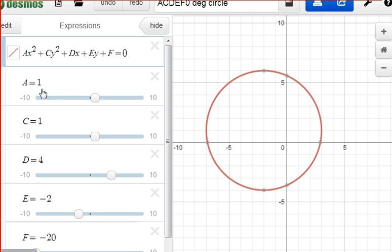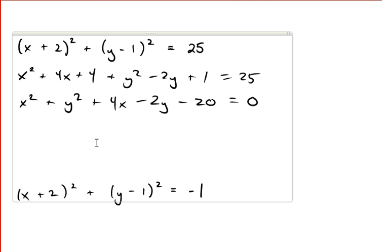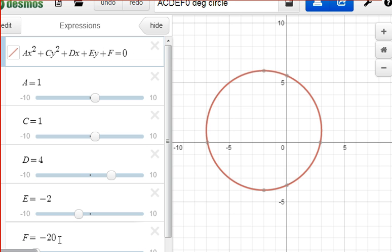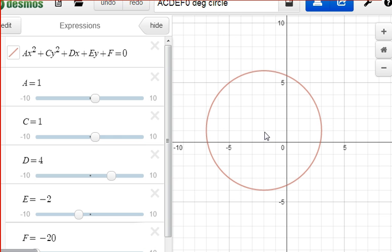So here's that circle. We have 1, 1, 4, -2, -20. And we get a circle whose center is at (-2, 1). Negative 2, 1 right there.